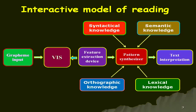The interactive model has various components. It begins with grapheme input — what letters of the alphabet are used when we read words. Then we have the Visual Information Store (VIS), also referred to as visuals, followed by the feature extraction device and the pattern synthesizer. The pattern synthesizer connects to syntactical knowledge — knowledge about sentence and word structure — as well as semantic knowledge (the meaning part), orthographic knowledge (how letters are arranged in words and sentences), and lexical knowledge (what kind of knowledge we have about the world).